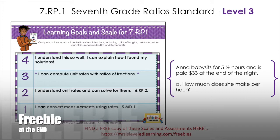Anna babysits for five and a half hours and is paid $33 at the end of the night. How much does she make per hour? Make sure students understand that 'per hour' is their clue and connect that language with unit rate — it's a unit rate because they're comparing to a denominator of one unit of time. Make sure students can work with fractions compared to dollars. You might find them drawing pictures, using different strategies, or converting five and a half to a decimal in order to multiply or divide. Ask students to do this on paper as a quick pre-assessment.